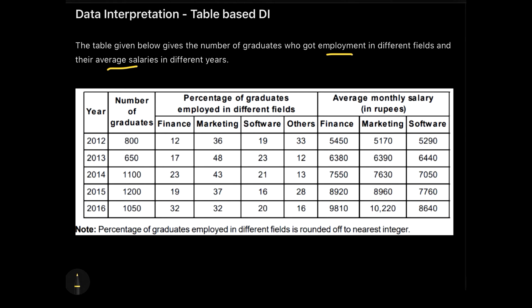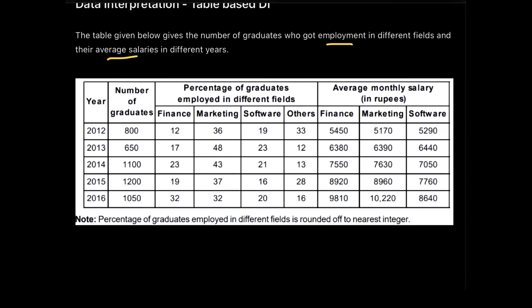Everyone knows percentages — if someone asks what is 26% of 800 it's very easy. But when you get a DI-based question where the questions are extensive and lengthier in calculations, we need to generate an approach which will make us complete the questions faster. Let's focus on the first question and see what calculations we are supposed to make here.